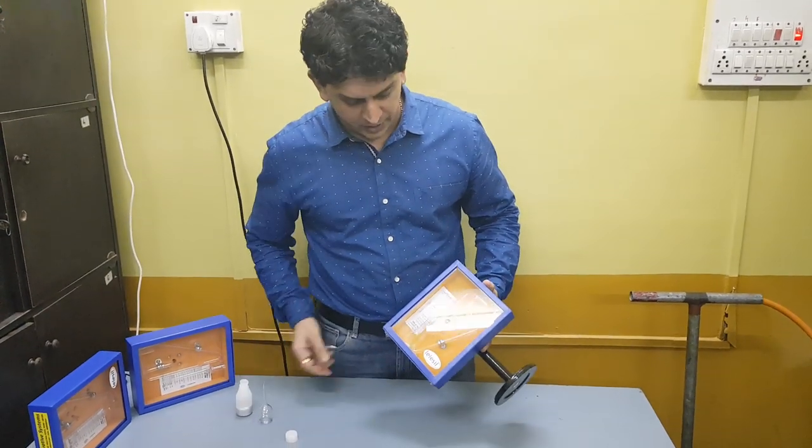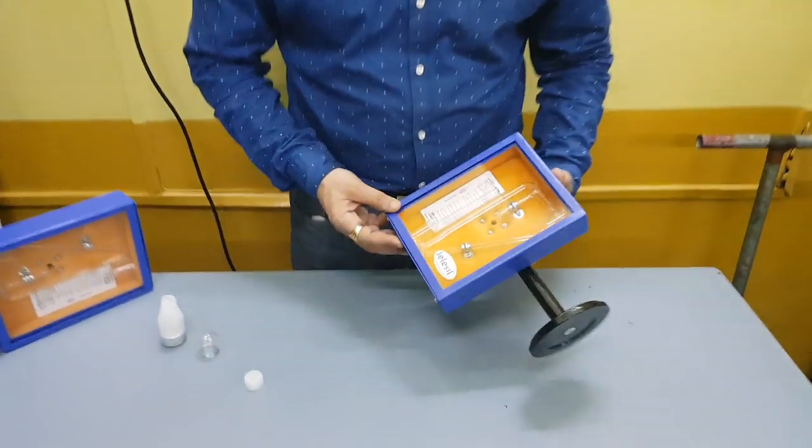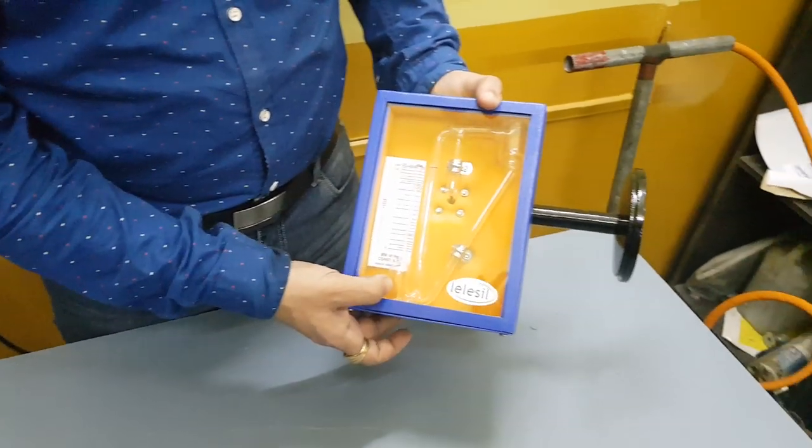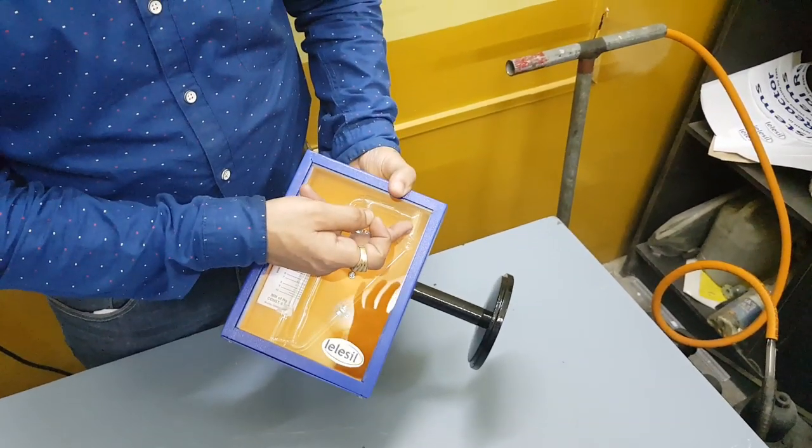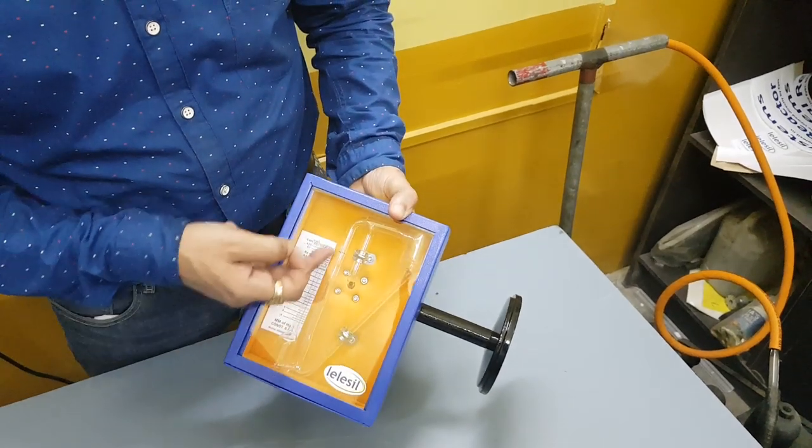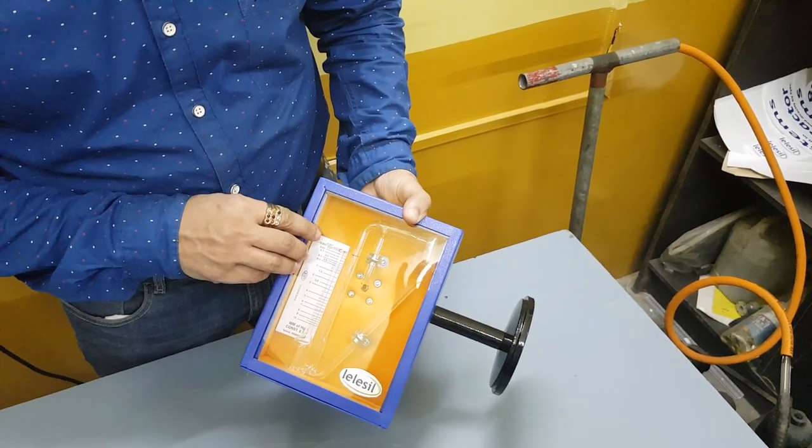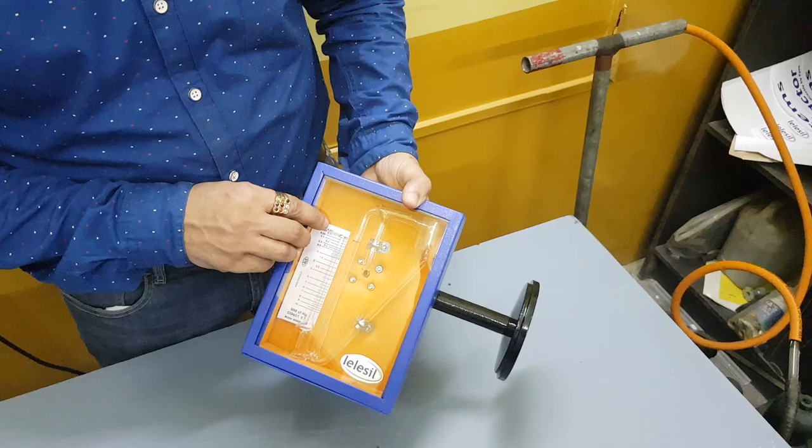How mercury has to be filled into a McLeod gauge? Here you see a McLeod gauge with a reservoir, a capillary tube, scale, second reservoir, guide tube, and a marking to show the position where the capillary is sealed.